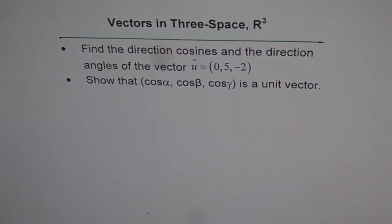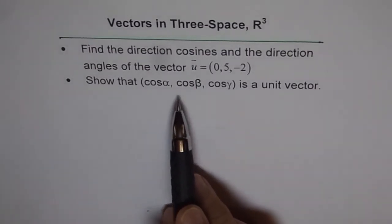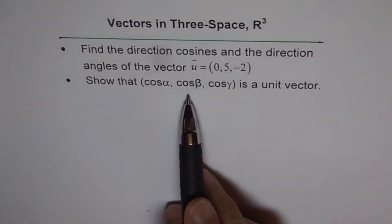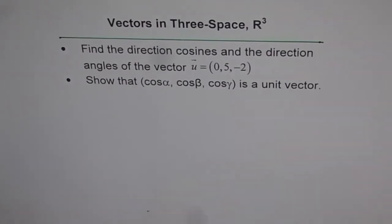Vectors in 3-space. Find the direction cosines and the direction angles of the vector u = (0, 5, -2). Show that (cos α, cos β, cos γ) is a unit vector.